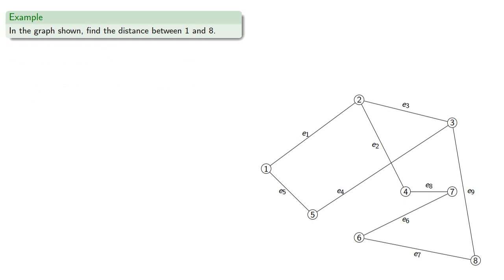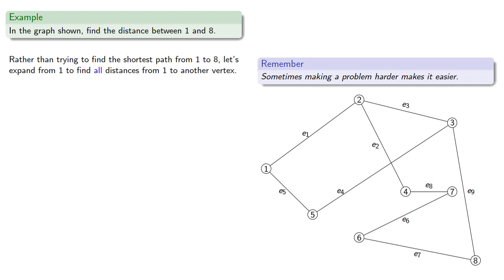For example, let's try to find the distance between 1 and 8, which means we want to find the shortest path from 1 to 8. Rather than navigating from 1 to 8 directly, it's worth noting that sometimes making a problem harder makes it easier. So rather than finding the shortest path from 1 to 8, let's expand from 1 to find all distances from 1 to another vertex. This method is known as Dijkstra's Algorithm, after the Dutch computer scientist Edsger Dijkstra.